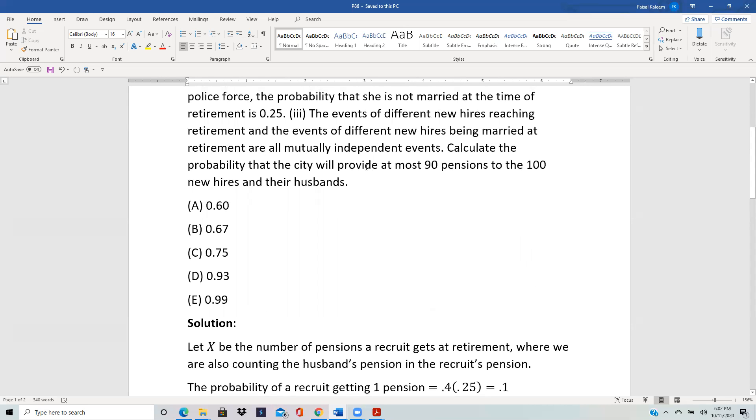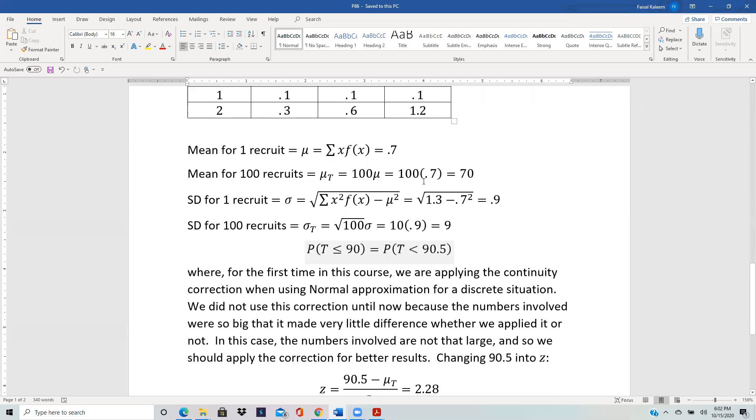Now we want the total pensions to be less than or equal to 90, at most 90, right, provide at most 90 pensions. Now for the first time we are going to apply the continuity correction because the number of pensions will be a discrete variable, but since we are going to apply normal approximation, and normal distribution is a continuous distribution, in general we should always apply continuity correction. So less than equal to 90 is like less than 90.5.